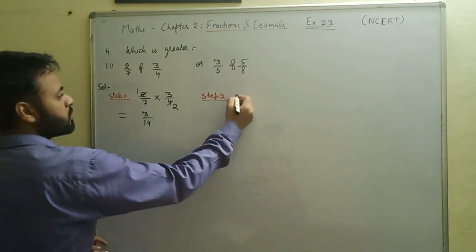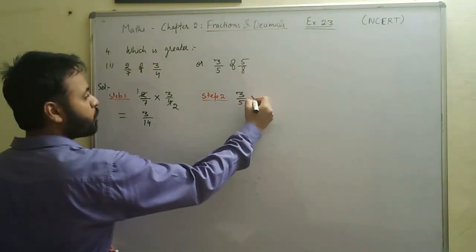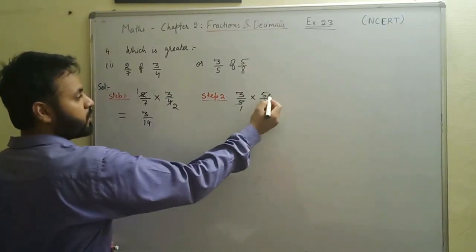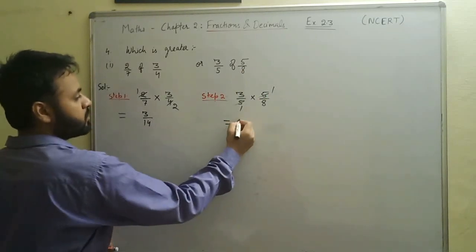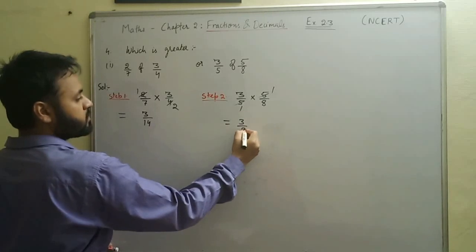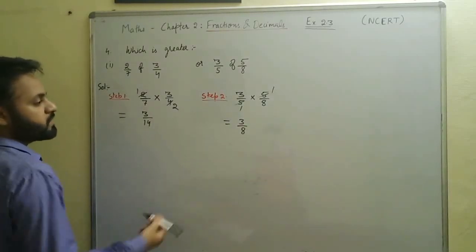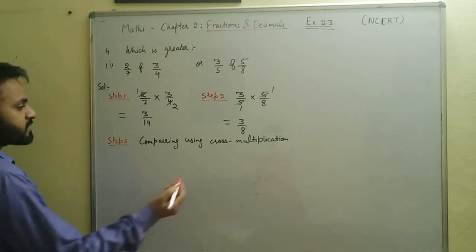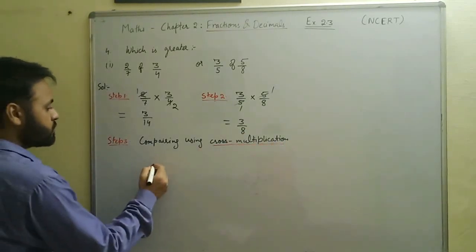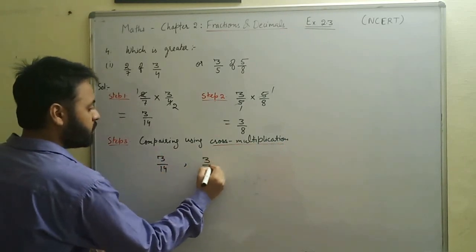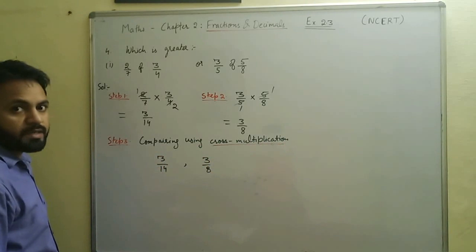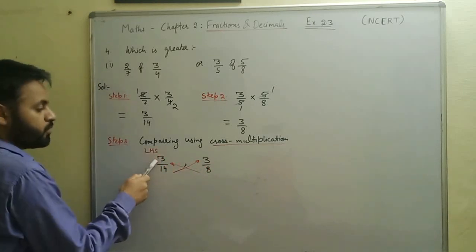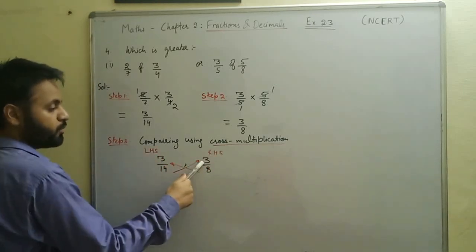In step two, we multiply three by five and five by eight. We cancel the fives, giving three times one over one times eight, which is three by eight. Now to compare three by fourteen and three by eight, we can use LCM method or cross multiplication. Using cross multiplication, the numerators stay on their respective sides and the denominators are shifted across.